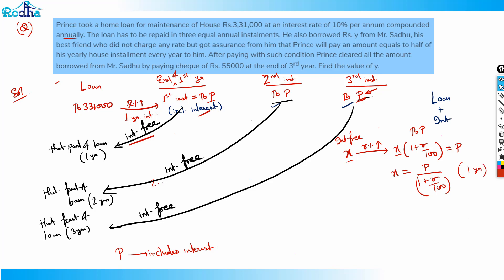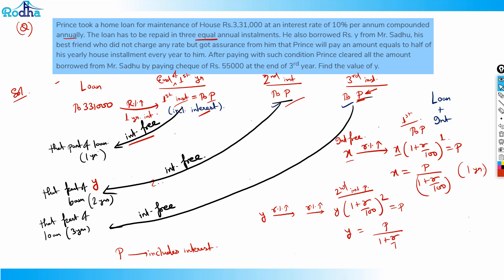So the interest-free value after one year is P / (1 + r/100)^1. After two years, if y was the interest-free value and interest was charged for two years, then y × (1 + r/100)² = P, so y = P / (1 + r/100)². This is the second installment. Both P values are equal here since we have three equal annual installments.